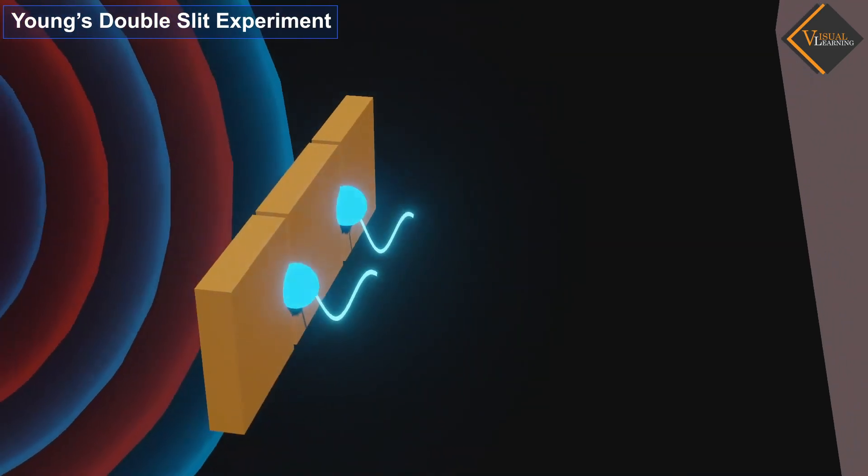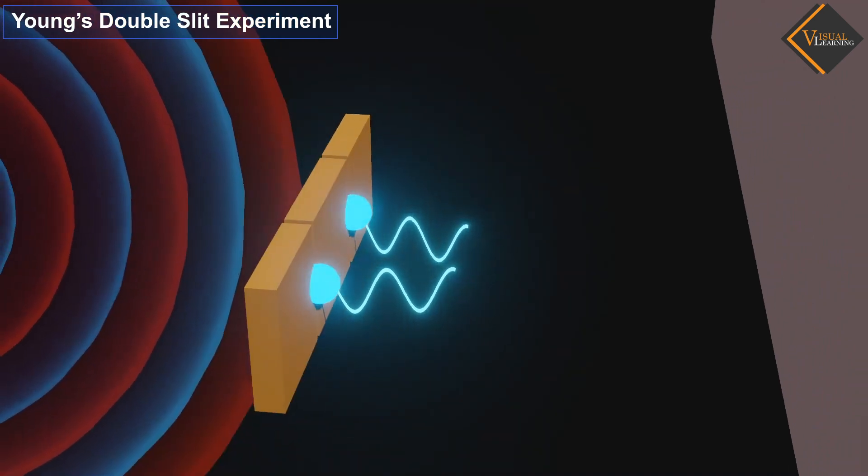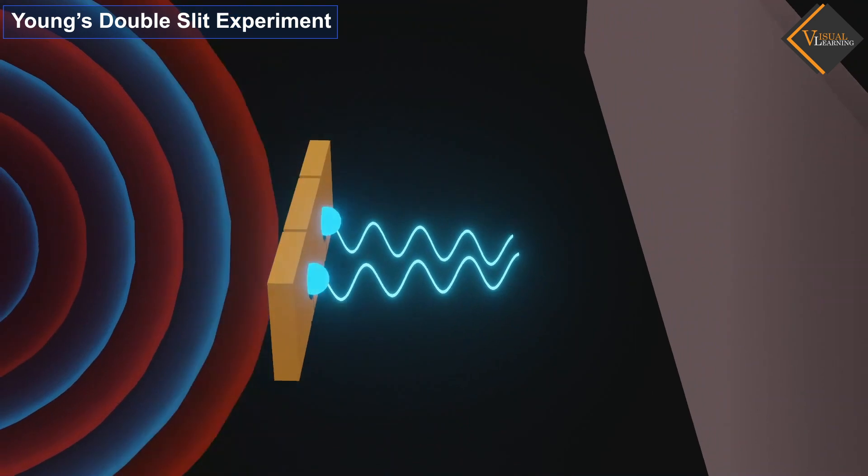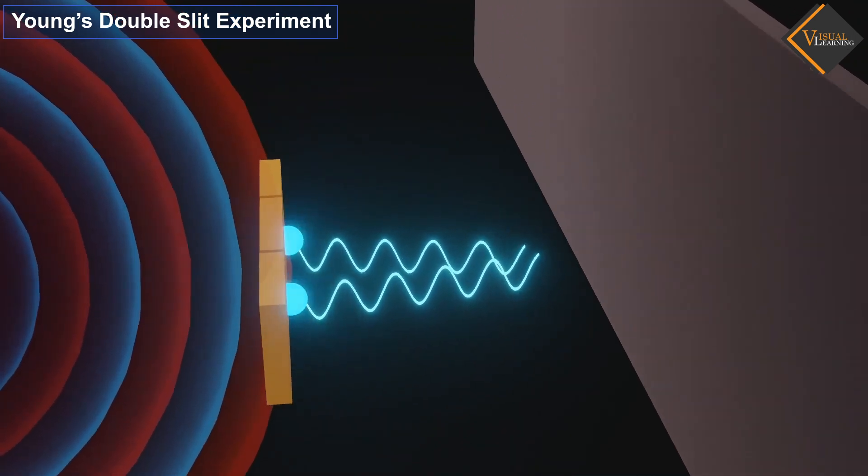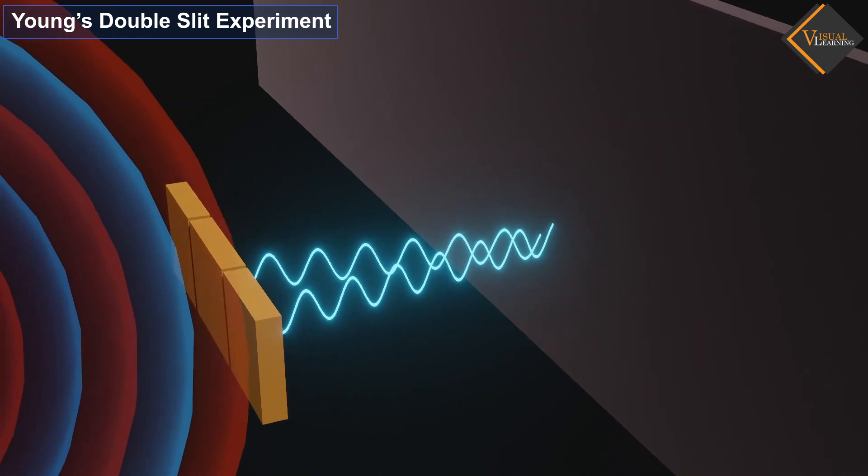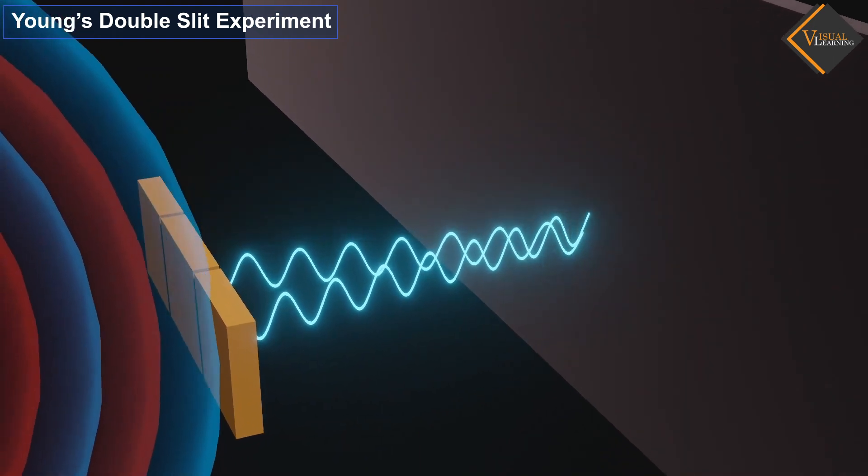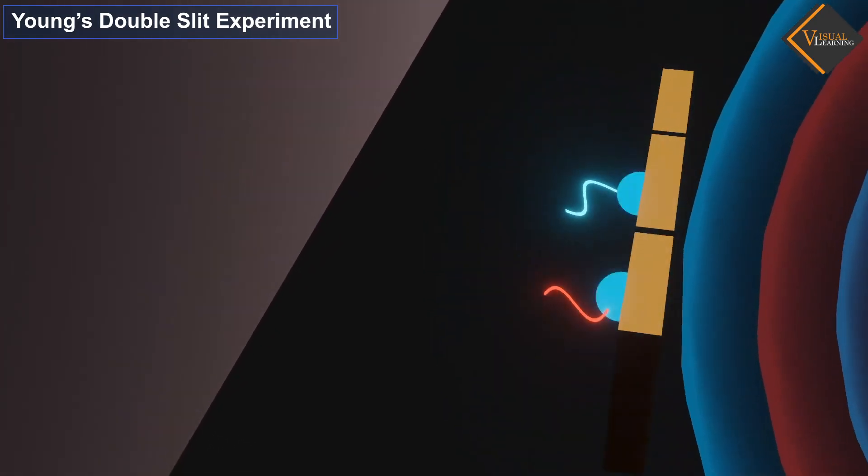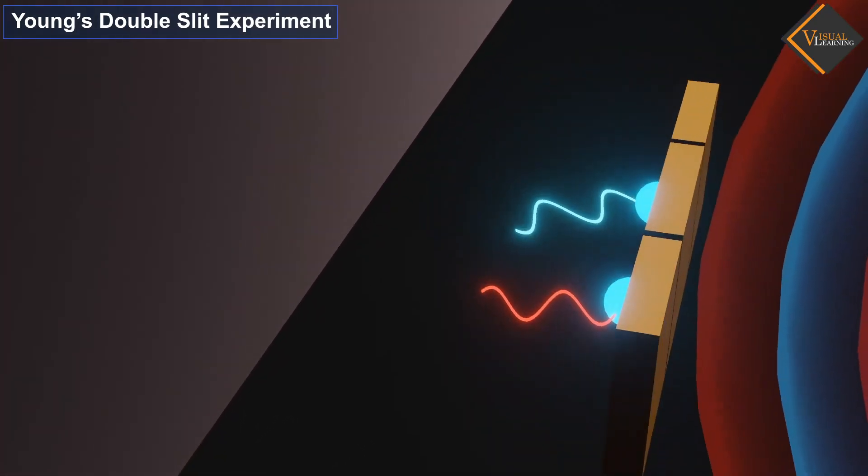In this experiment, it was found that light behaves not as particles but as waves. Additionally, it was observed that light waves exhibit interference where two or more light waves superimpose on each other, resulting in constructive or destructive interference. This phenomenon is known as interference.